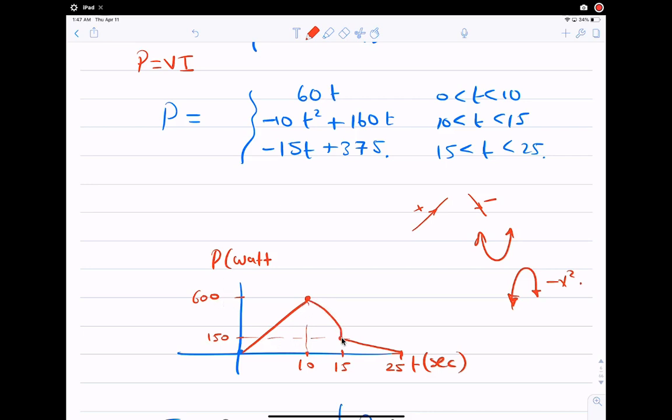Now it's a hill, a downhill. And to know where I end up, 15, plug it in here, negative 10 times 15 squared plus 160 times 15. By the calculator you would have 150. So I knew that I would end up at 150. And then from 15 to 25, from 15 to 25, another line but it's a descending line because it's negative. And where would I end up? Plug in the 25. Negative 15 times 25 plus this number would give you a 0. So this is the power sketch. That was the first part of this question.